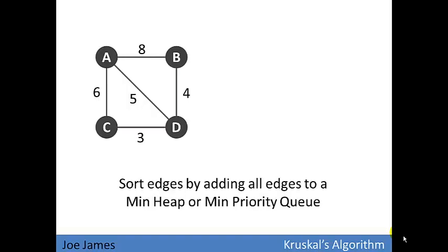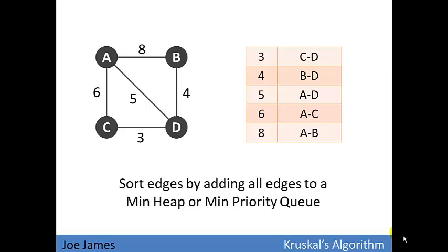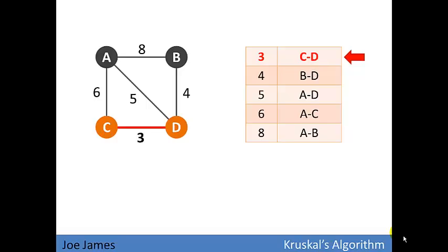We're going to start by sorting all the edges, and to do that we'll add them to a min heap or a min priority queue. Now we get a sorted list of all the edges, and then we're going to relax the edges one by one. By relax, I mean we're going to use the edge or not use the edge. We decide if we can use the edge to connect additional vertices to our graph. The first edge is edge three, which connects C to D. We definitely are going to use that because we haven't discovered vertices C and D yet.